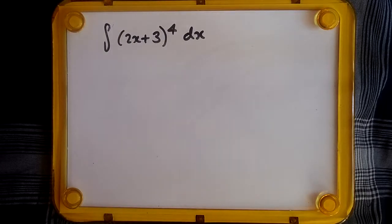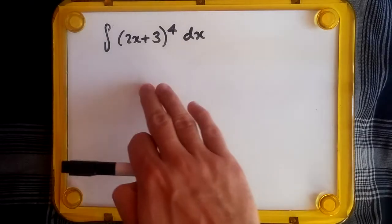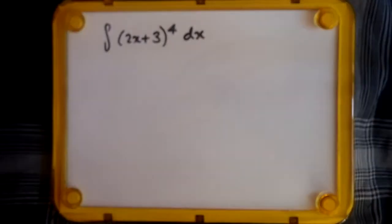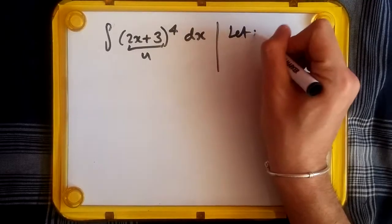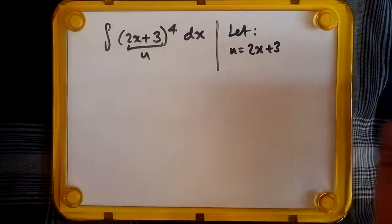Hey guys, welcome back to another video. Here we'll be looking to integrate (2x+3) to the power 4, and we will use the u-substitution technique. Suppose we let u equal 2x+3. Taking the derivative should give us du equals 2 times dx.